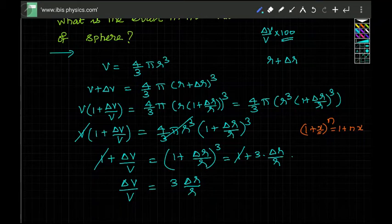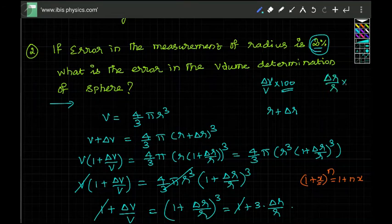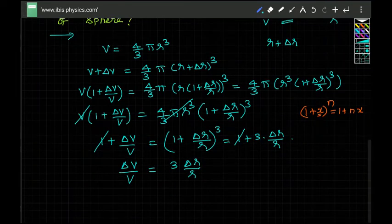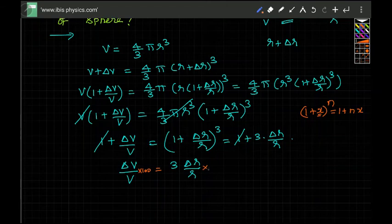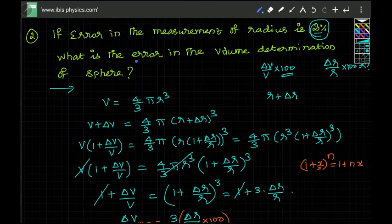What is given in this problem is that the radius measurement error is two percent, meaning delta r by r into 100 equals two percent. We need delta v by v into 100. Multiplying both sides by 100: delta r by r into 100 is two percent, so three times two percent gives delta v by v into 100 equals six percent. So the error in the volume determination is six percent.